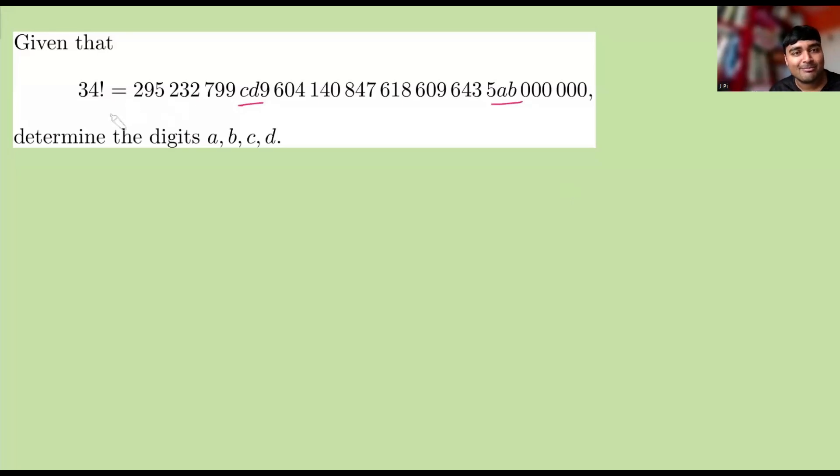34 factorial is this huge number here, but if you can see, we've got some numbers missing, the c, d, and a, b here. It's our job to work out what those digits are. Do pause the video now and give this problem a go for yourself, but I'm going to dive right into a solution here.